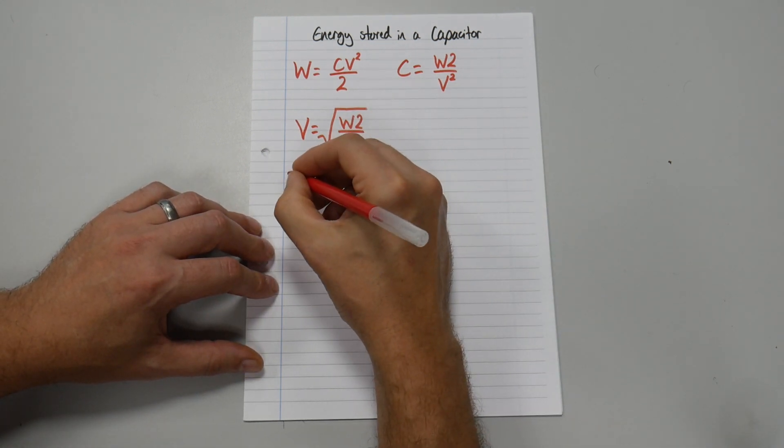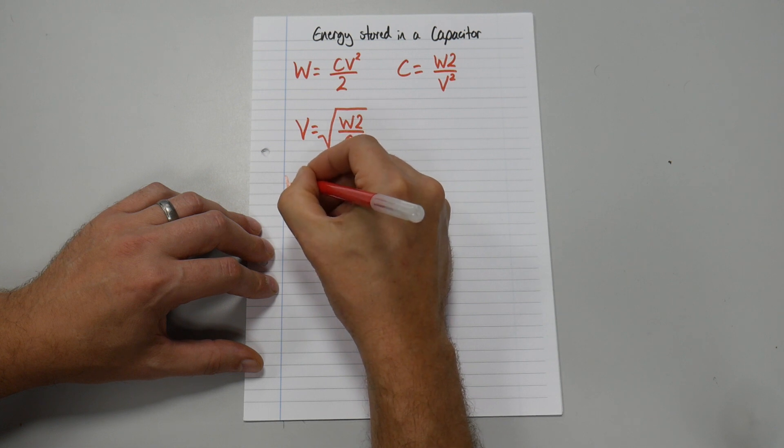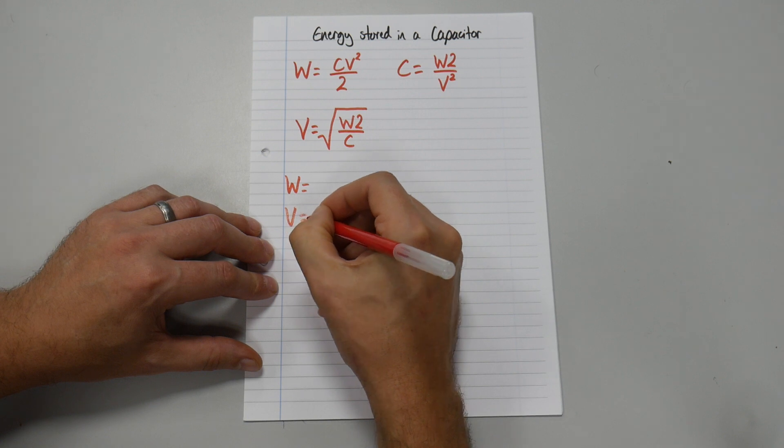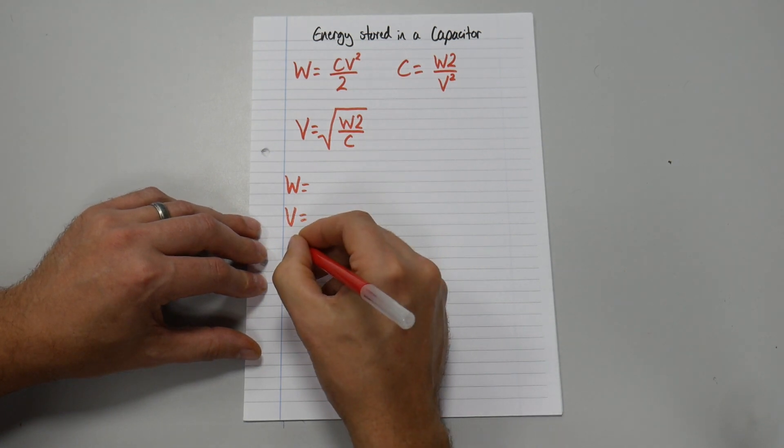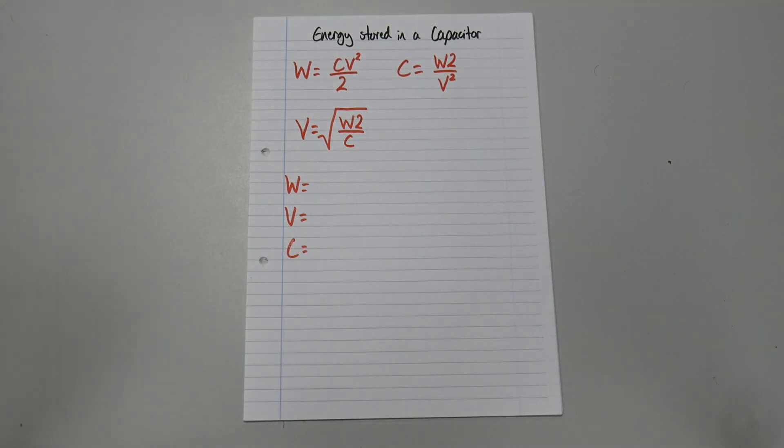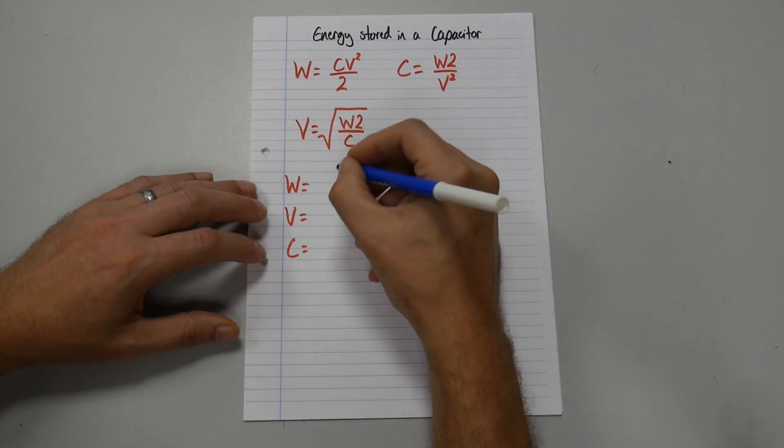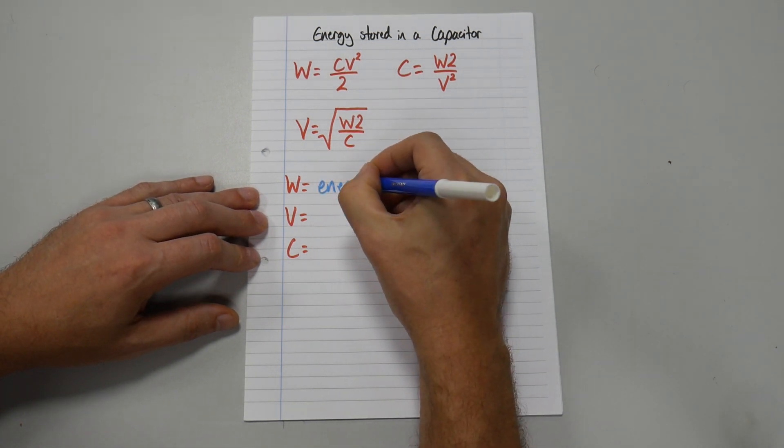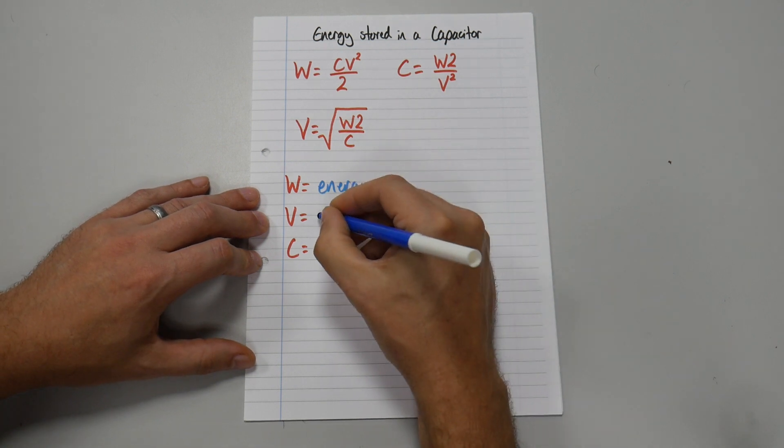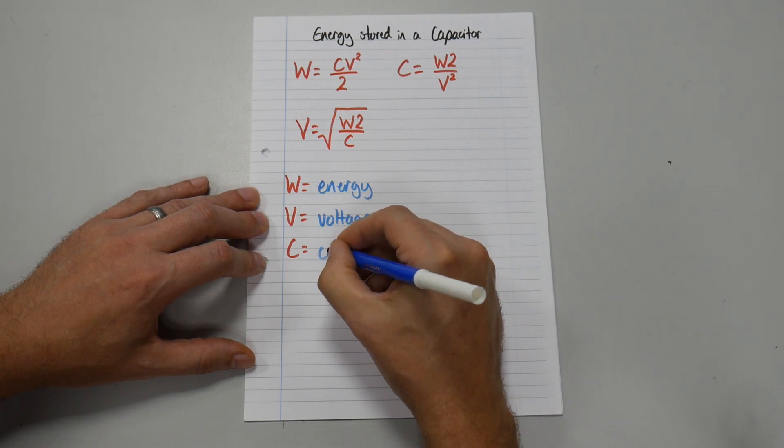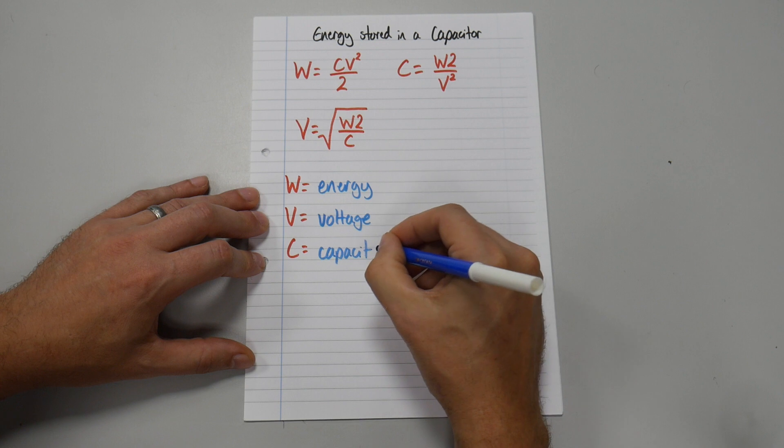And let's write down what formula symbols we have. So we have W equals, and then we have V equals, and then we have C equals. So I'll change my color pen. W is Energy. V is Voltage. And C is Capacitance.